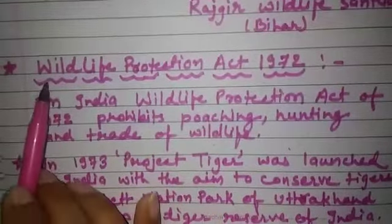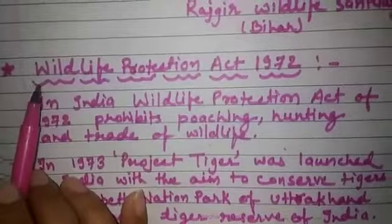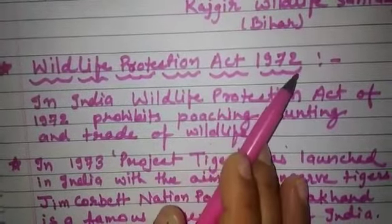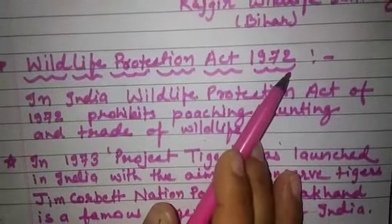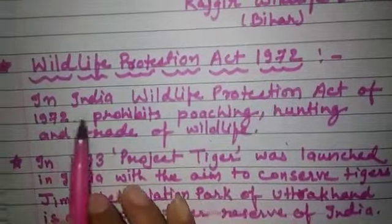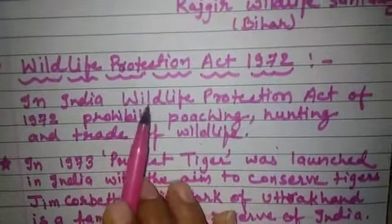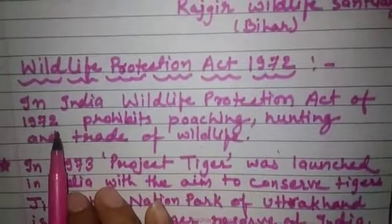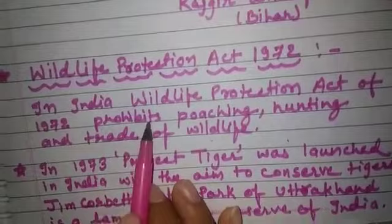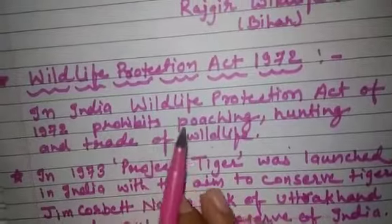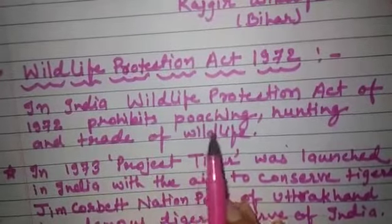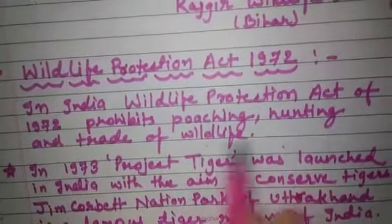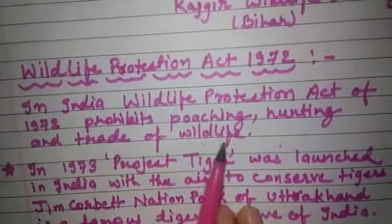Let me focus on the Wildlife Protection Act of 1972. In India, the Wildlife Protection Act of 1972 prohibited poaching, hunting, and trade of wildlife.